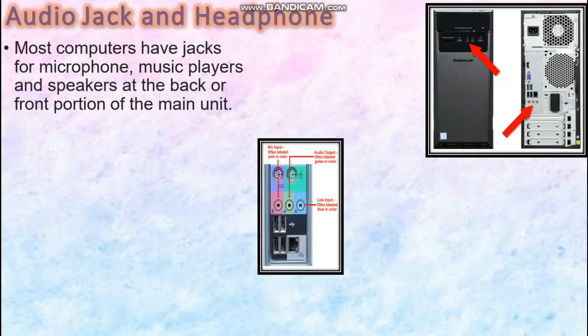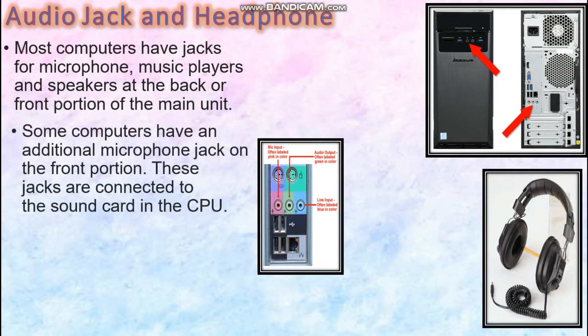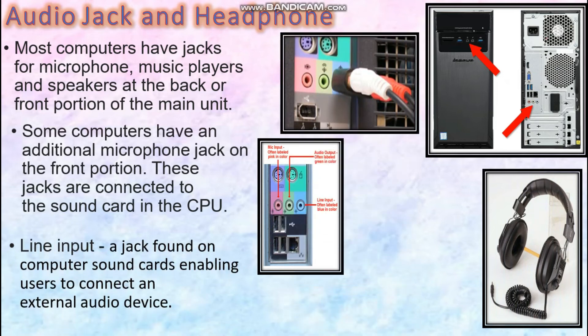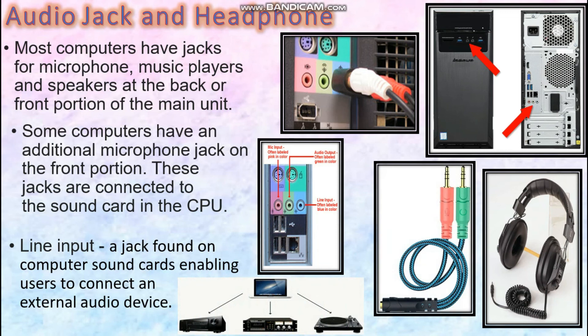Let us get familiar with the audio jack and headphones. An audio port or jack is one to which an audio device such as a speaker, headphone, or microphone is connected. Some CPUs have this additional microphone or audio jack on the front portion of the CPU case. The jacks are connected to the sound card in the CPU. Line input is another additional port found only on the behind portion of the CPU, which enables the user to connect another external audio device such as an amplifier. Have you seen a DJ playing his mixer? This is also connected using an audio cable. This audio cable looks like this — the pink color is for mic and the green color is for your headphones.